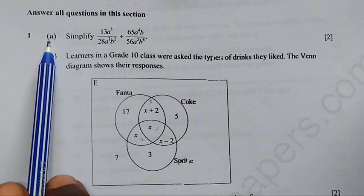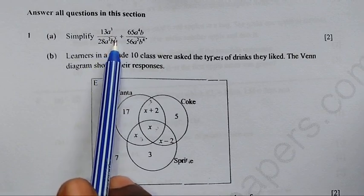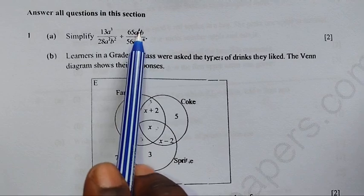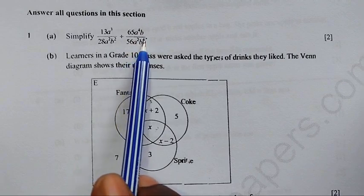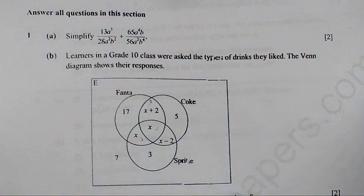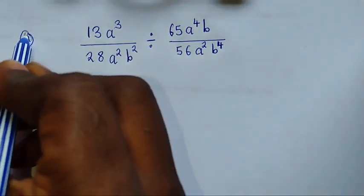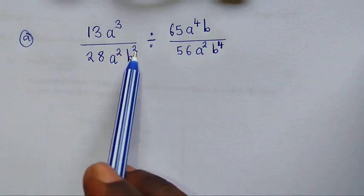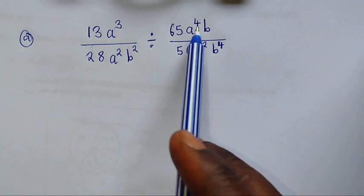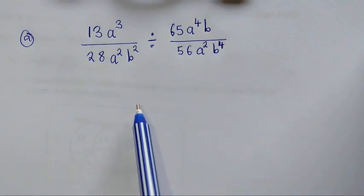We are going to start with Question 1a: simplify 13a³ over 28a²b² divided by 65a⁴b over 56a²b⁴. This question is carrying two marks. So how can we simplify this expression? Here is our Question 1a — we need to simplify 13a³ divided by 28a²b² divided by 65a⁴b over 56a²b⁴.